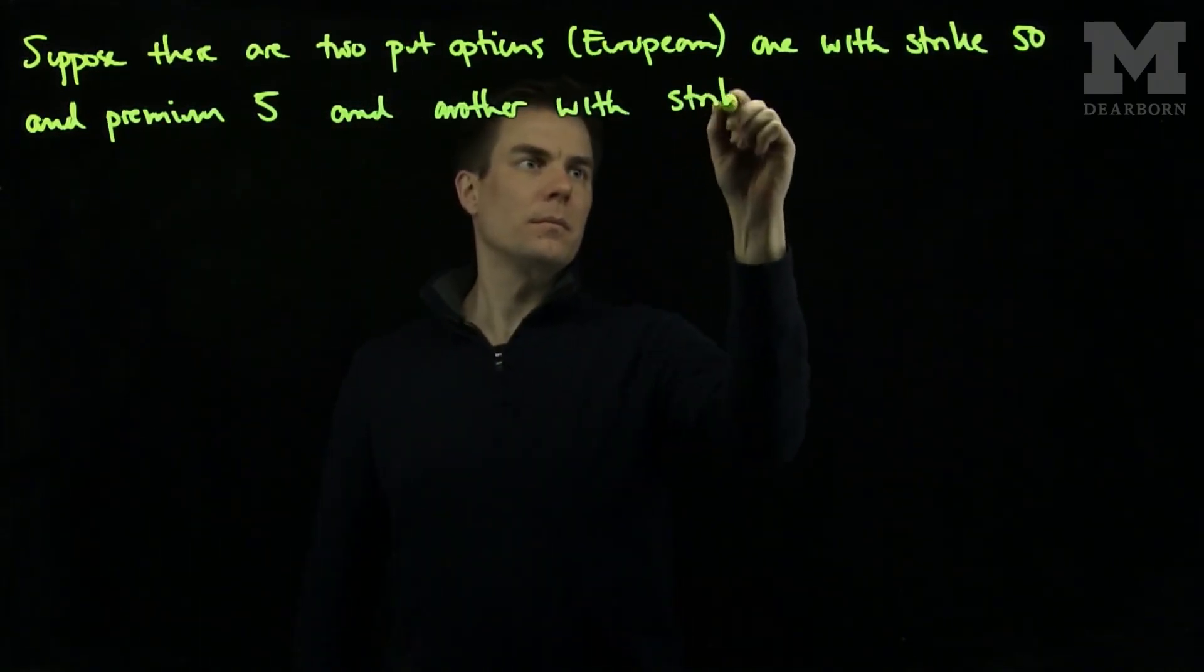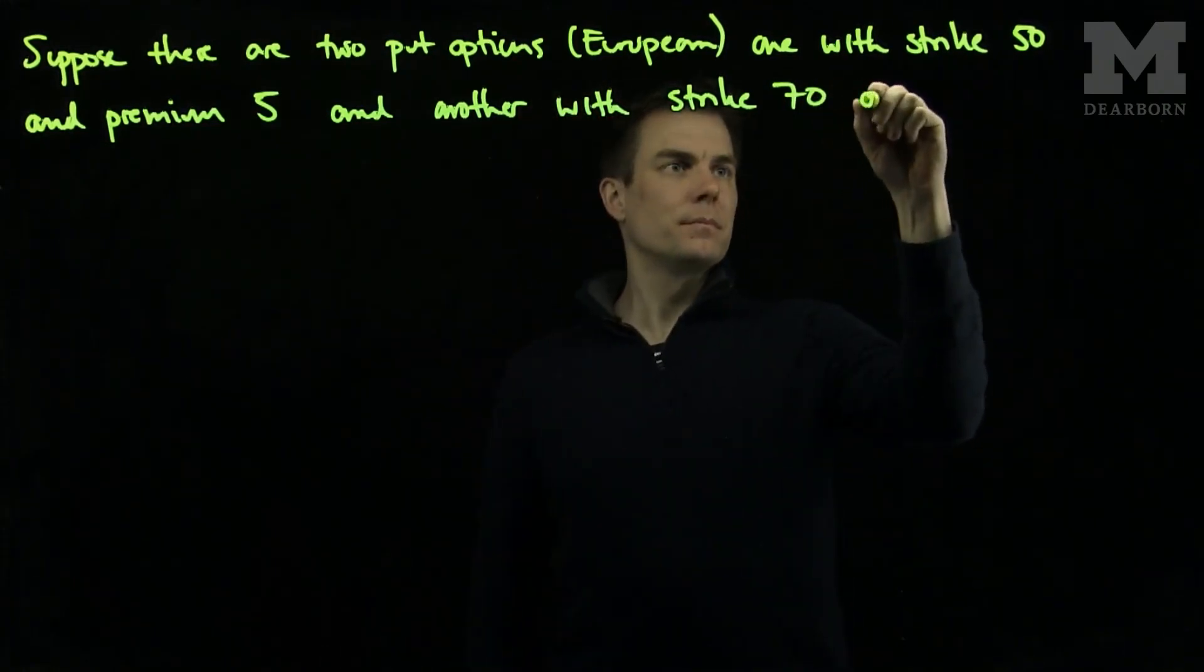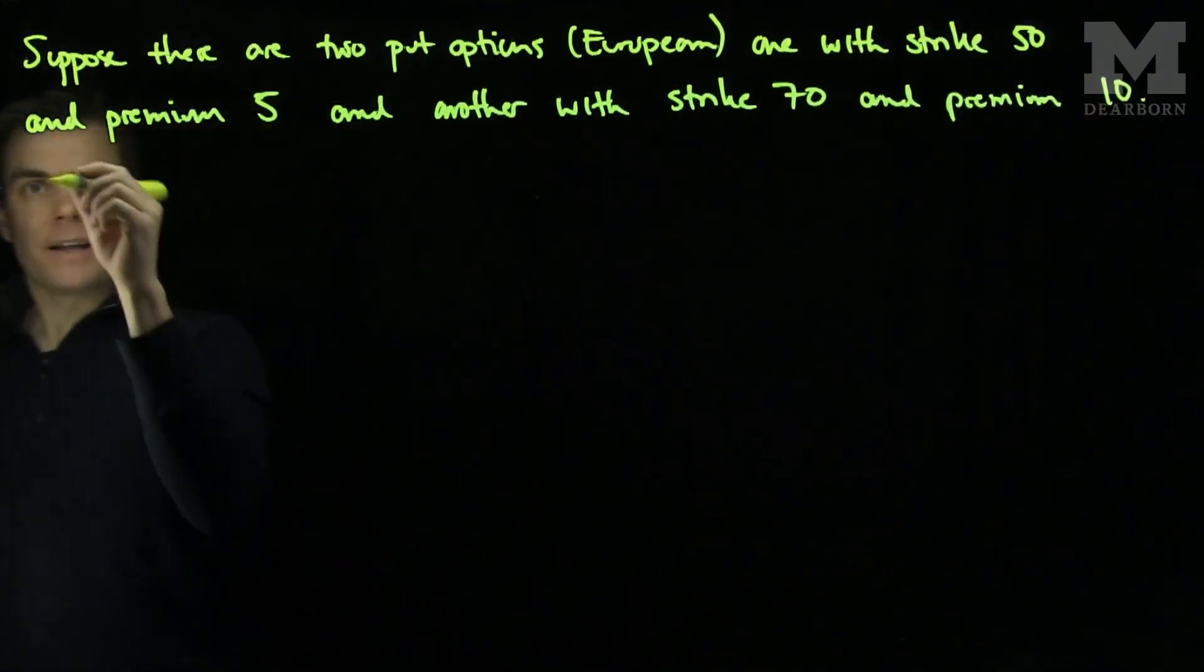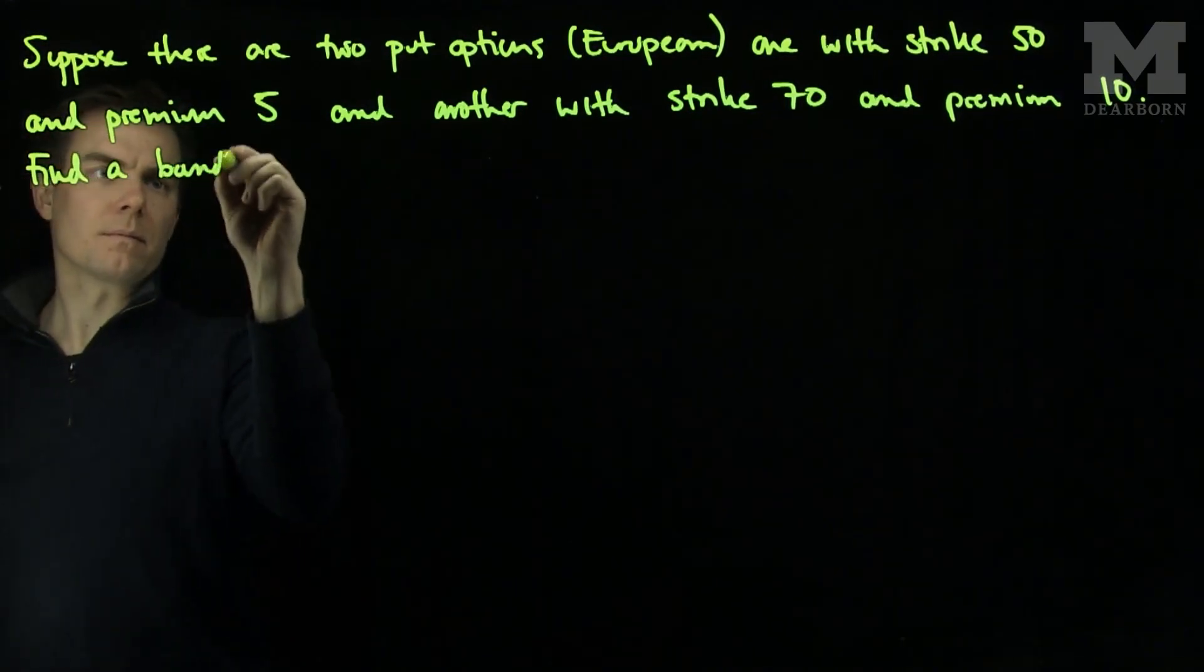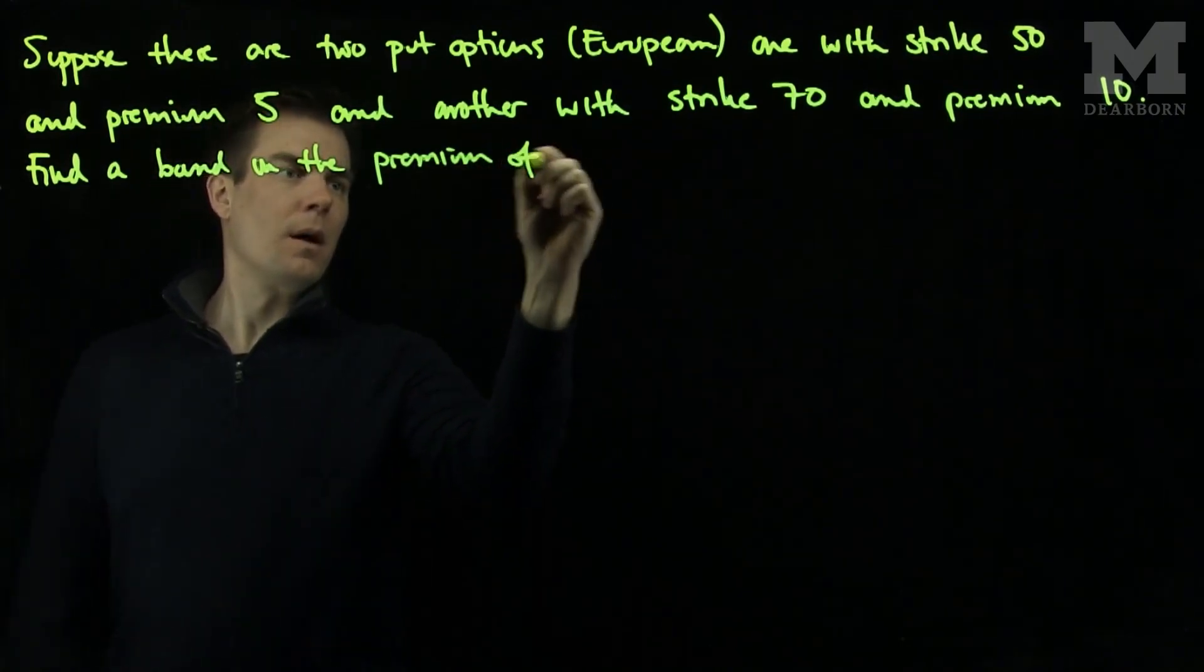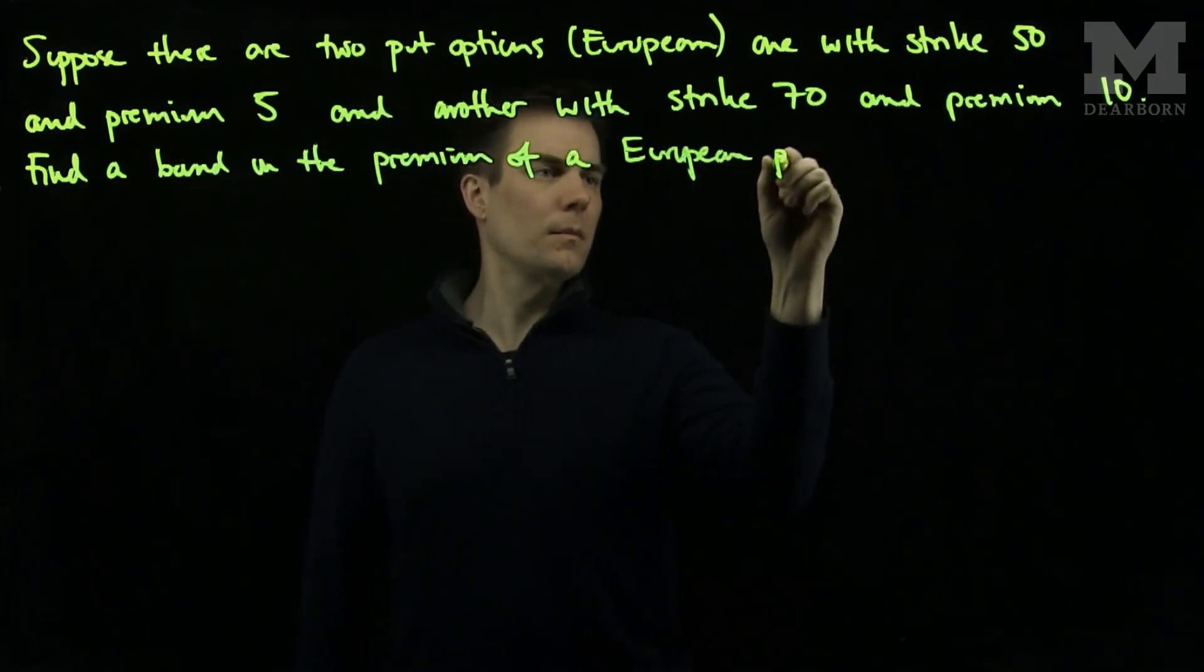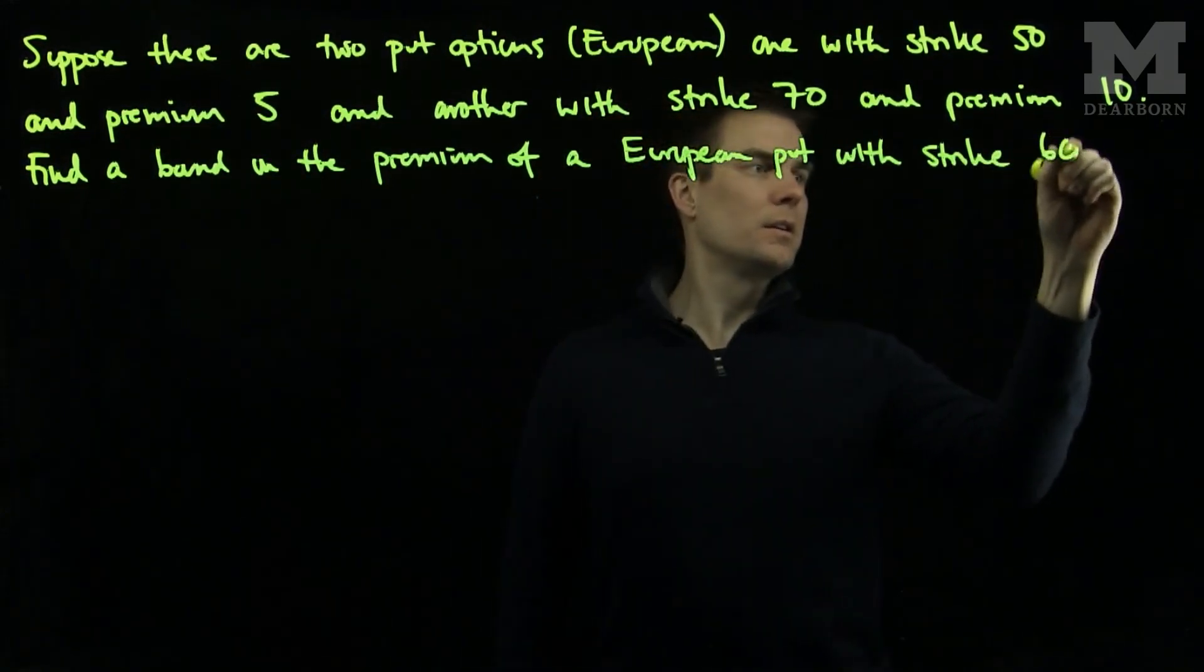with strike seventy, and premium ten. Let's find a bound on the premium of a European put with strike sixty.